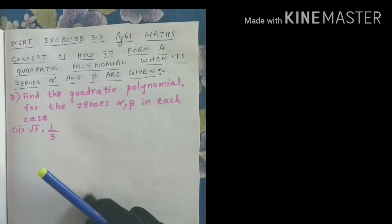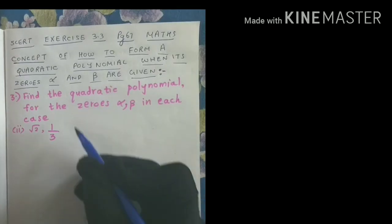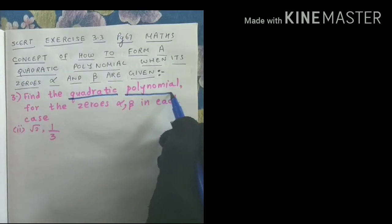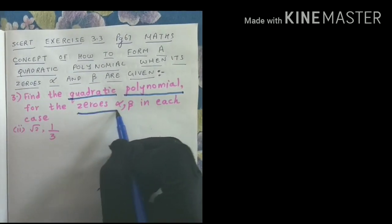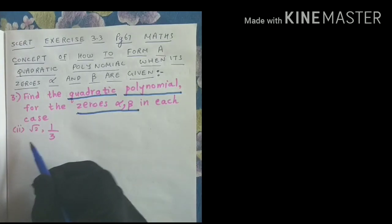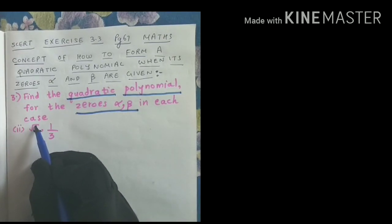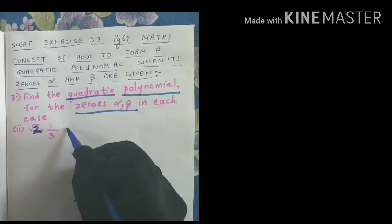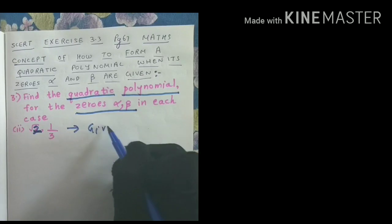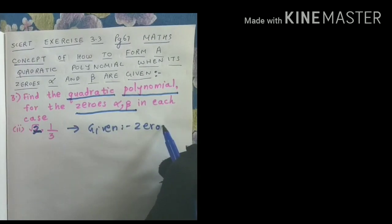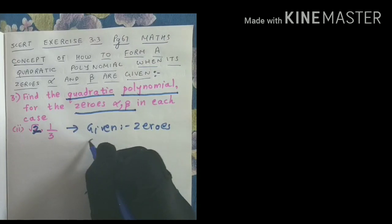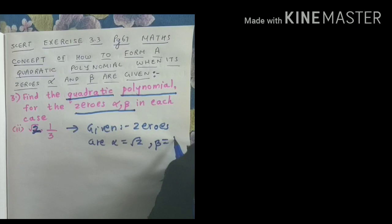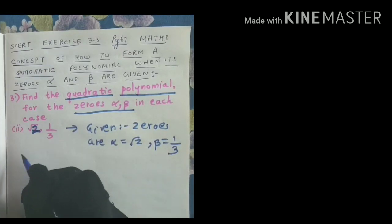I'm doing the third question, second bit. All are the same — if you understand this, you can do the remaining bits. It is asking me to find a quadratic polynomial, and the zeros alpha and beta are also given. Here, root 2 and 1 by 3 are the zeros. So the given zeros are: alpha equals root 2 and beta equals 1 by 3.